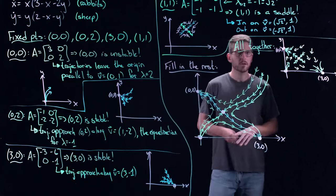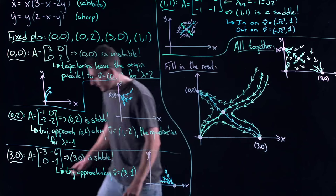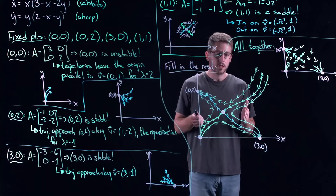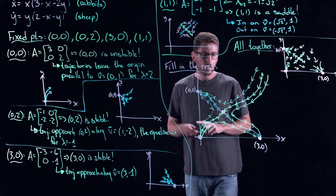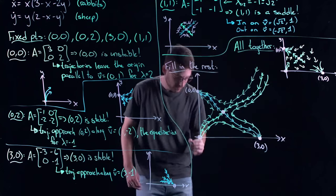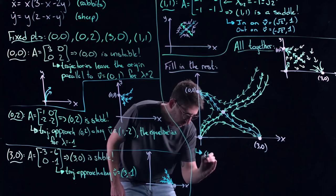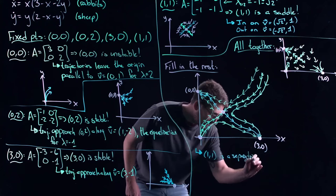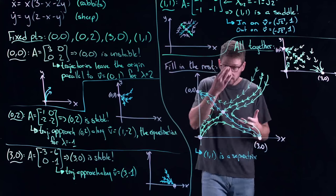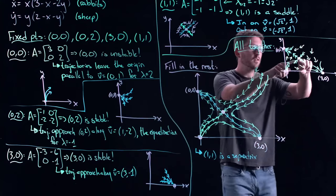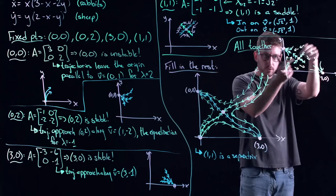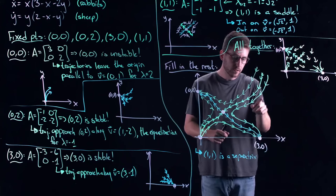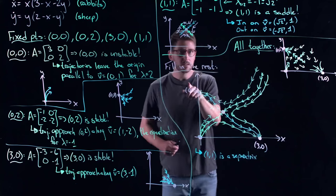Now I want to point out some very important structures. The saddle point (1, 1) in the middle is called a separatrix. The word 'separate' is in there — it separates where you go. The stable direction pulling you in splits where trajectories wind up. If you are below that stable direction, you wind up at (3, 0); if you're above it, you wind up at (0, 2).